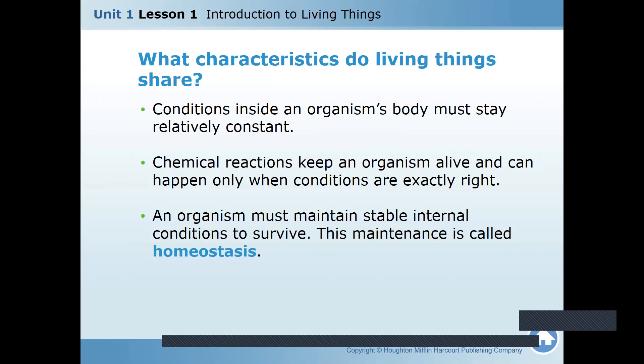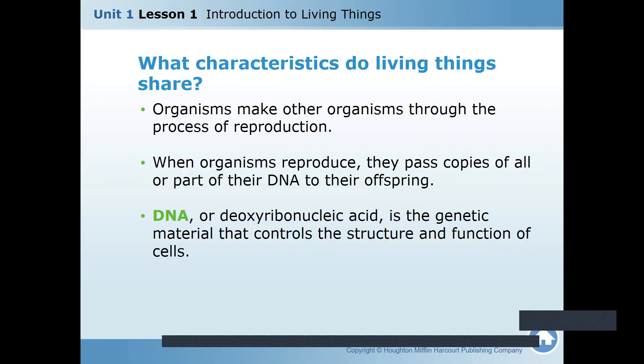I'm not going to explain again because the whole lesson I have told you about homeostasis. Organisms make other organisms through the process of reproduction — through asexual or through sexual. Whenever organisms reproduce, they pass copies of all the parts of their DNA to the offspring. We have been studying how DNA comes from the parent to the son or daughter, or flower to a flower. What is the full form of DNA? Deoxyribonucleic acid. It is a genetic material that controls the structure and function of the cells.